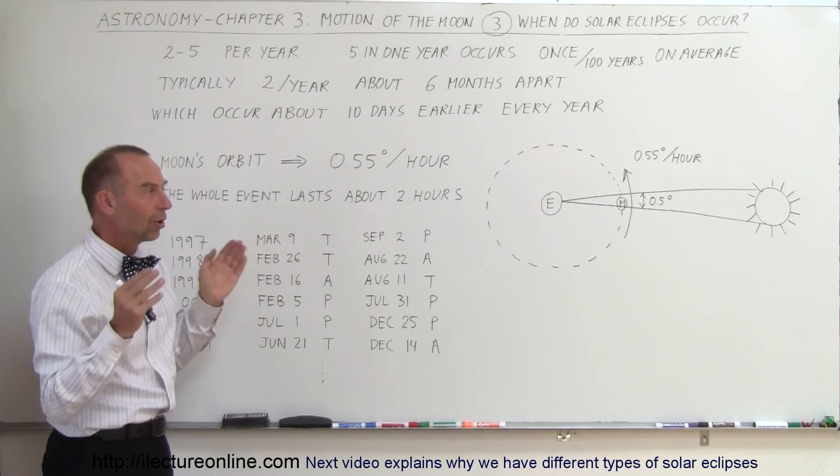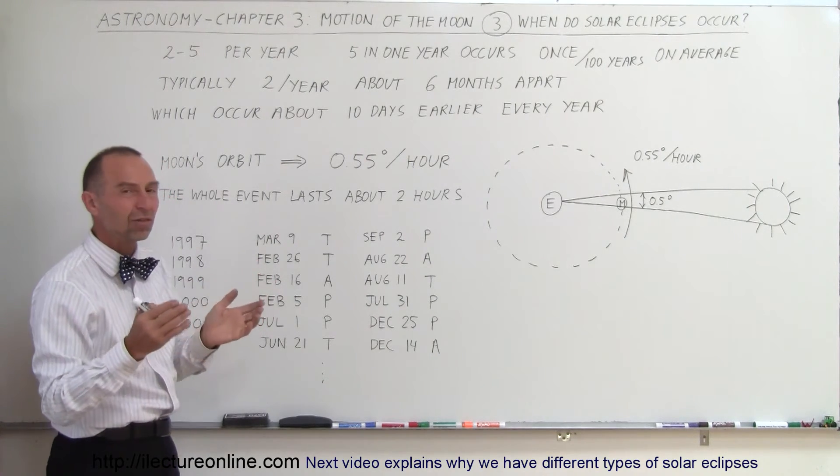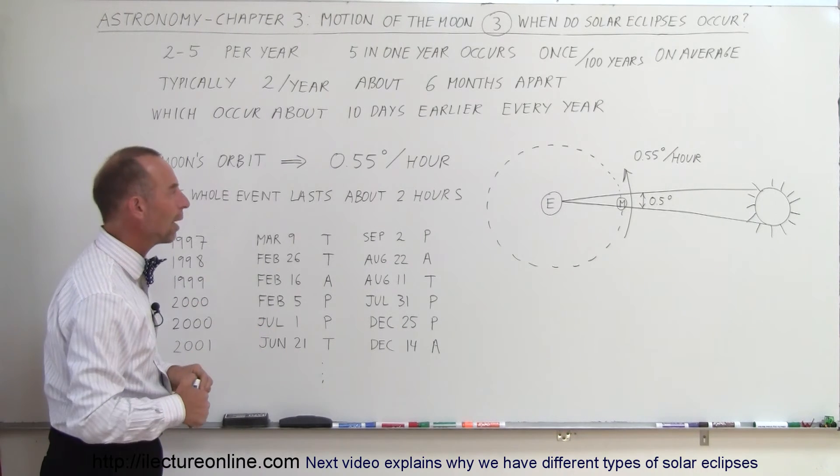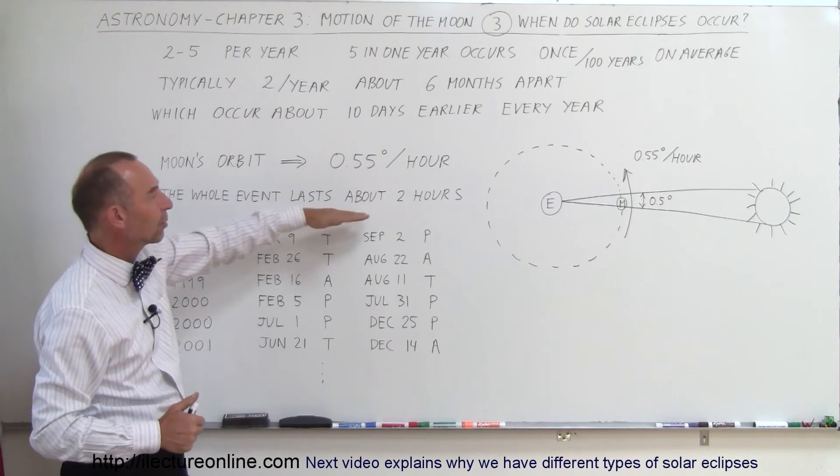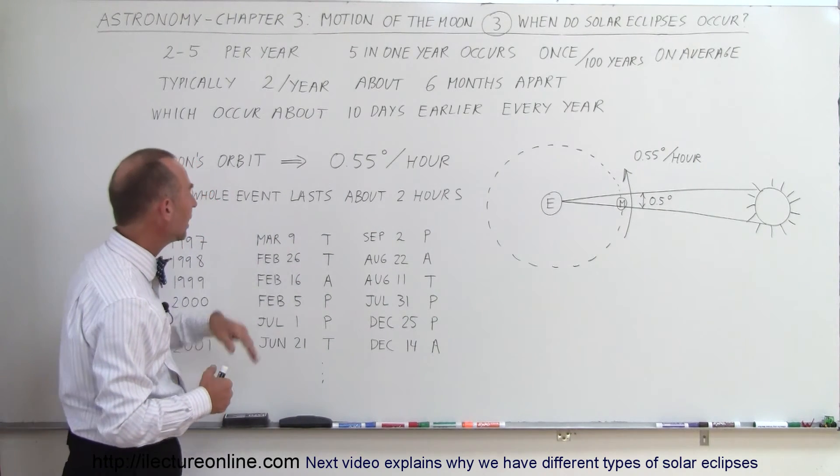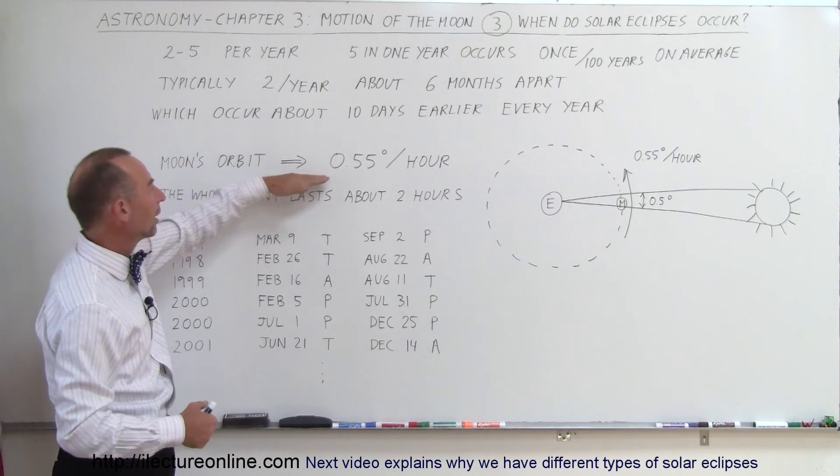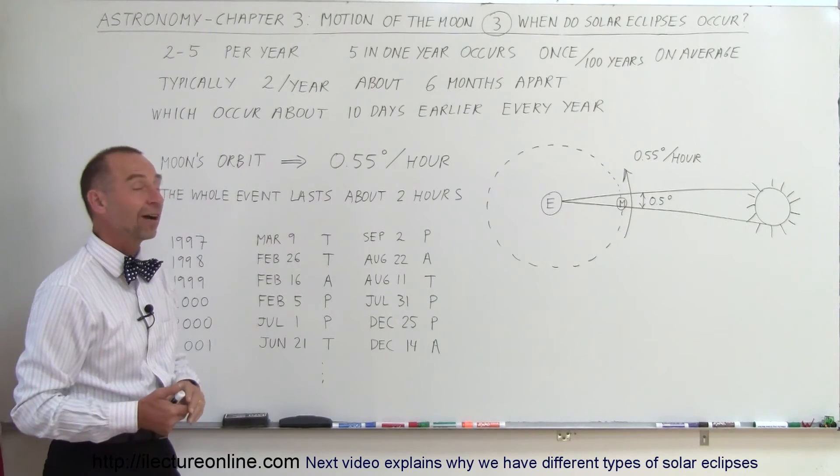With a partial eclipse, the period is a lot less than two hours, can be as little as a little over an hour to almost two hours, depending upon what type of solar eclipse. So you can typically say the event lasts about two hours when it's a totality, because the Moon's orbit causes the Moon to travel at 0.55 degrees per hour.